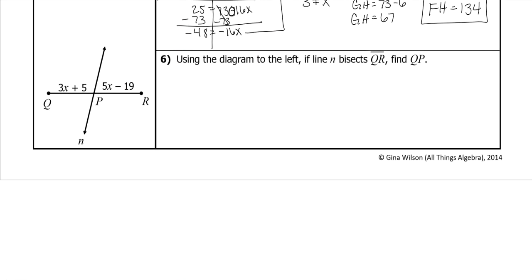Last one. So using diagram on the left, if line n bisects PQ, which means that it creates this midpoint so they're the same, you set them equal to each other and solve. Move the smallest x this time, so subtract 3x from both sides so we don't have to deal with so many negatives.